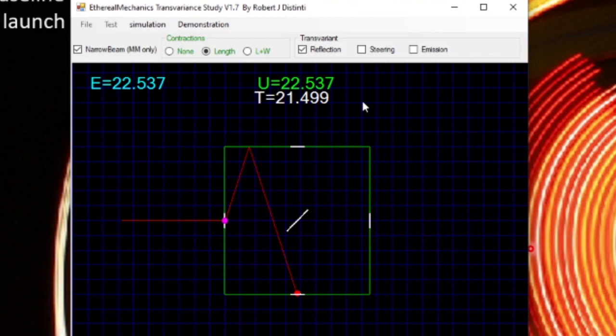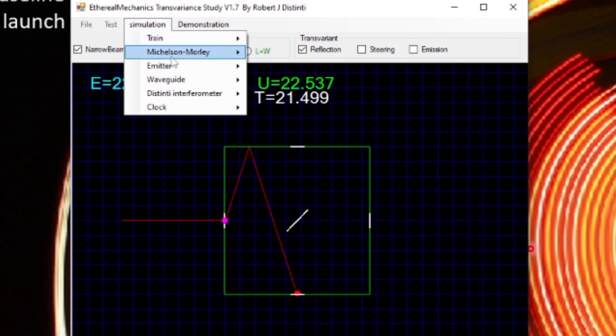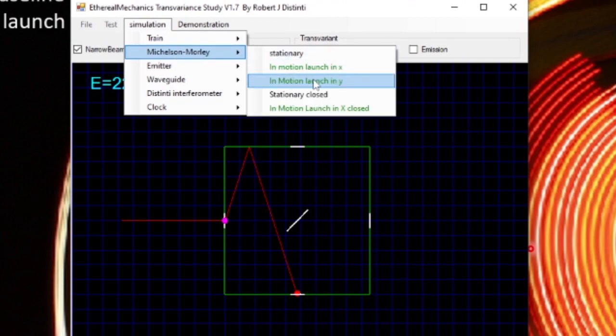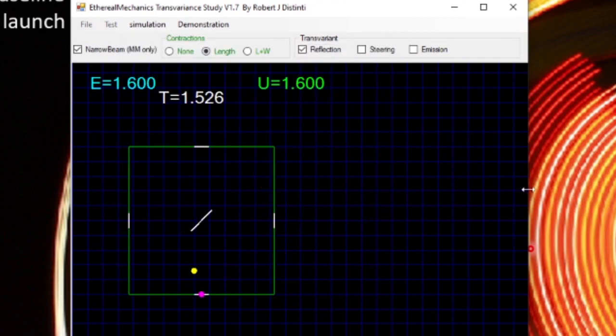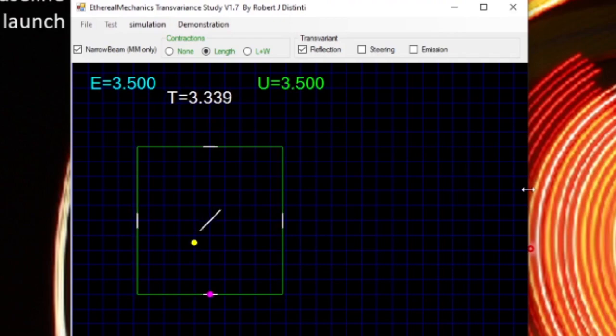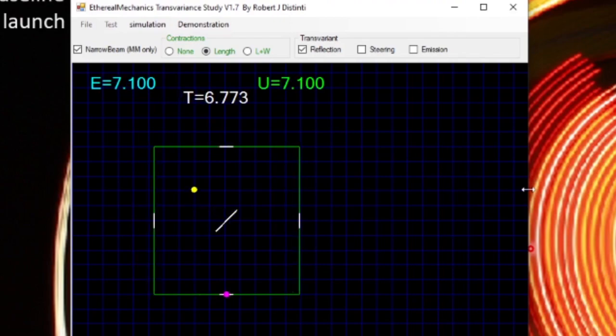Now let's run this simulation in reverse. Instead of launching in the X direction, we're going to launch from where the pulses end up into the Y direction. We're going to run this essentially in reverse. Oh look at that, we're going to miss the mirror completely. This brings up another transvariance that we need.